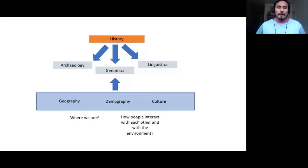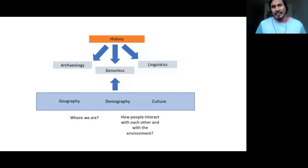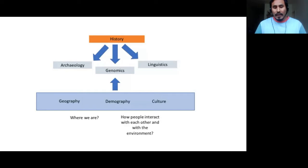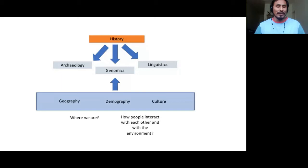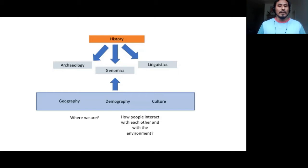To get some insights about history, we will not try to understand just genetic observations, but we also have to join this information with archaeology and linguistics and see what the main patterns are. To understand the history of these groups and human populations, we look at how factors like geography, demography, and culture can shape these three different patterns. I have framed two questions: first, where are we from a geographical point of view, and second, how did people interact with each other and with their environment.